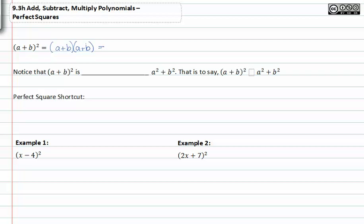If we FOIL this out we get a squared plus ab plus ab plus b squared, which is equal to a squared plus 2ab plus b squared.